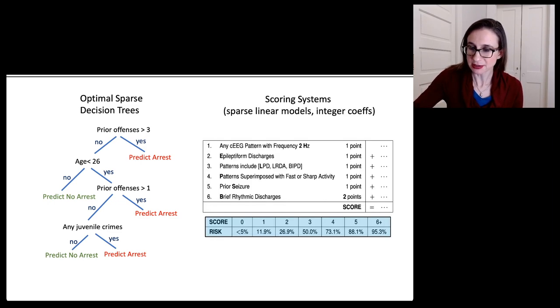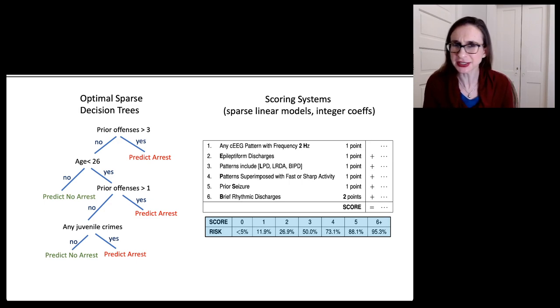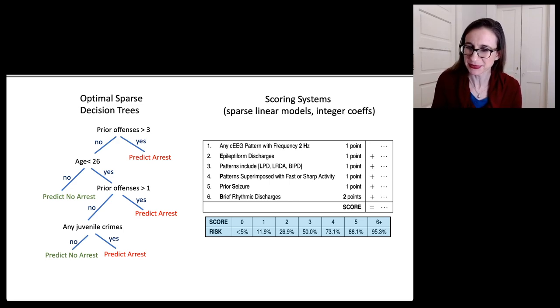Now, scoring systems is another important problem that's been around for a hundred years. And only in the last few years have we been able to produce optimal scoring systems. So a scoring system is a linear model that's sparse and has integer coefficients. Like here the coefficients are 1, 1, 1, 1, 1, 1, and 2. Now again, this looks deceivingly easy to construct, right? But it's not.